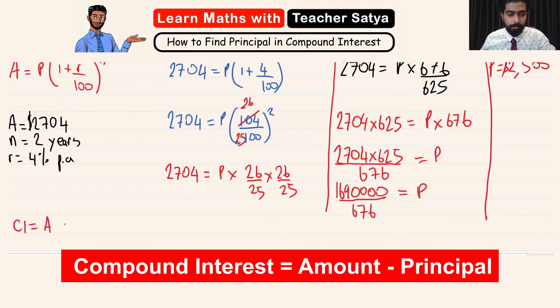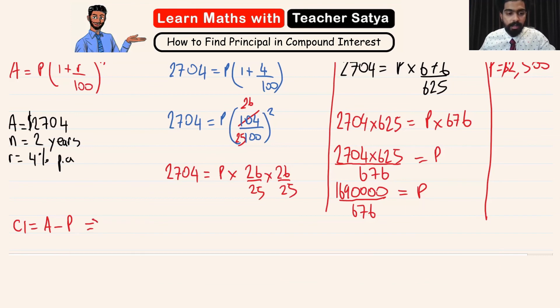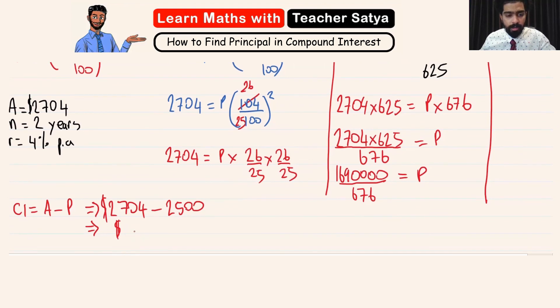We see that the amount is $2704 minus the principal that we just found, which is $2500. Therefore, the interest generated is $204.